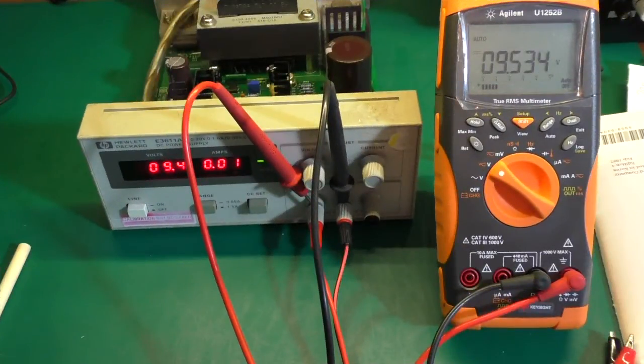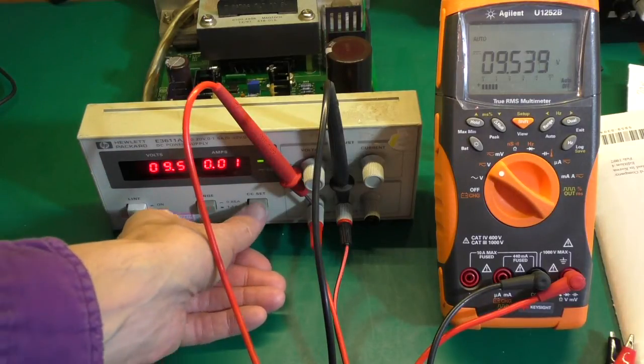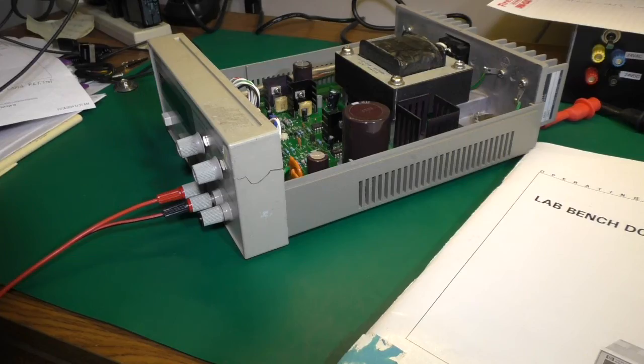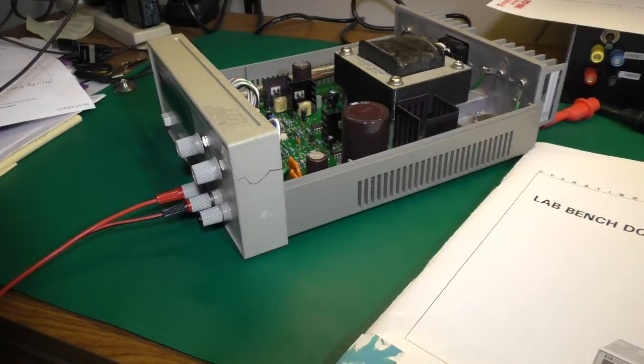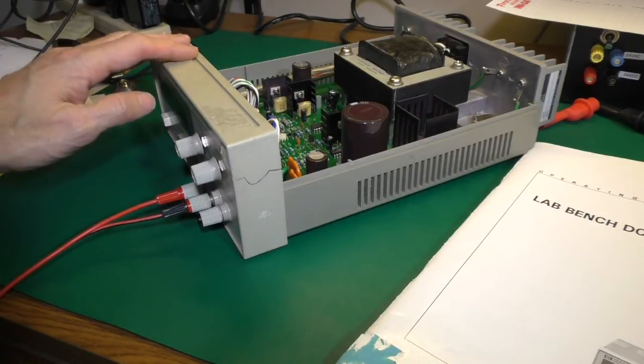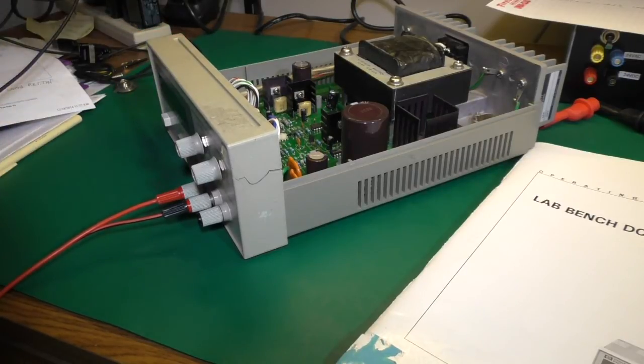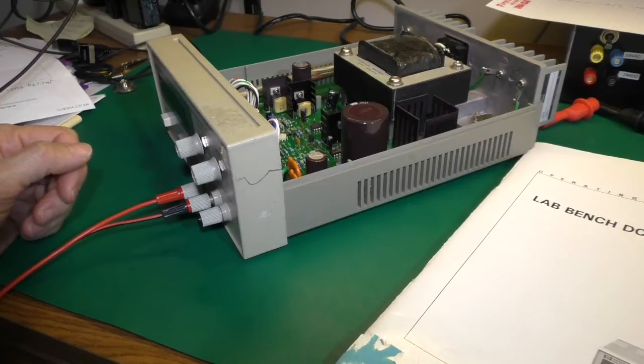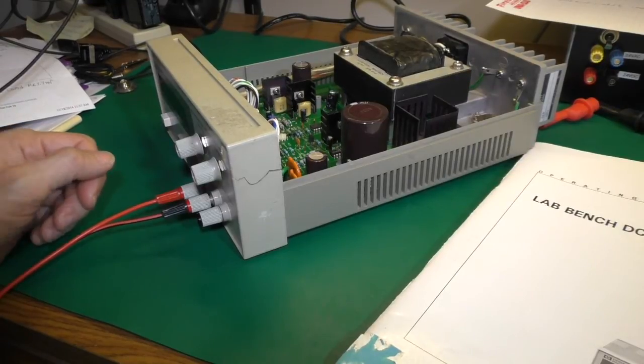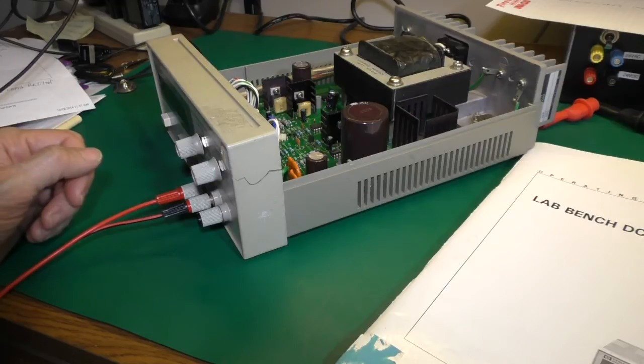Well, I replaced U4, which is an LF442, a high-speed op-amp. It did fix it, got it working. And I believe the problem was that this power supply was in an oily environment and that oil got down onto the circuit board and started conducting, shorted something out, which is evident by the solder mask that was burned off, and probably zapped the LF442 chip.